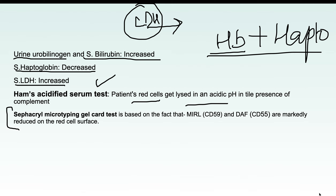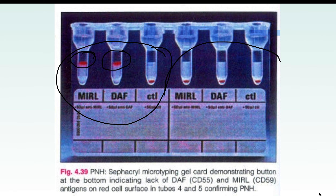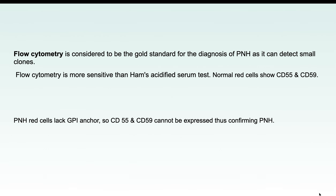The second test is the Sucrose (Sucrose Lysis) test. We can also use antigen-antibody testing to detect reduction of CD55 and CD59. In PNH, the expression of CD55 and CD59 is absent, as shown in the diagram where normal cells express these markers but PNH cells show absent expression.